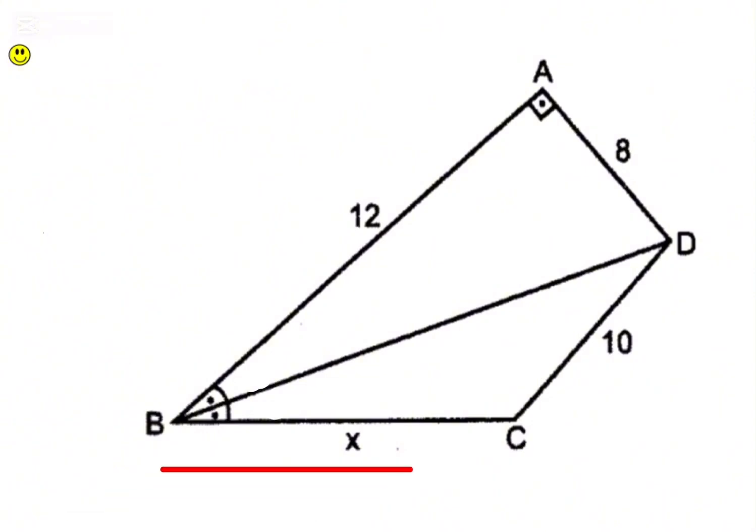First, to use the angle bisector, I need to extend line BC. Then, from point D, I'll draw a perpendicular extension to BC, and I'll label the intersection point as E.